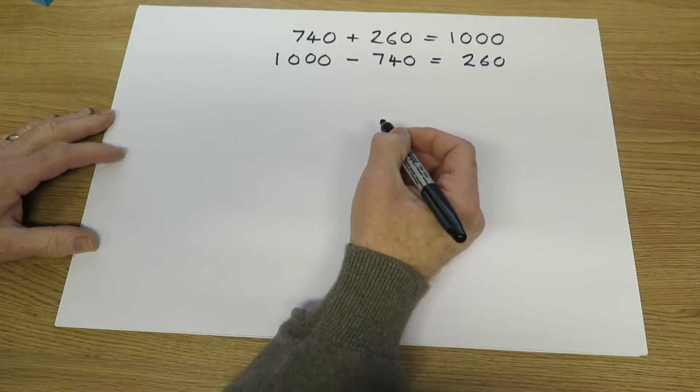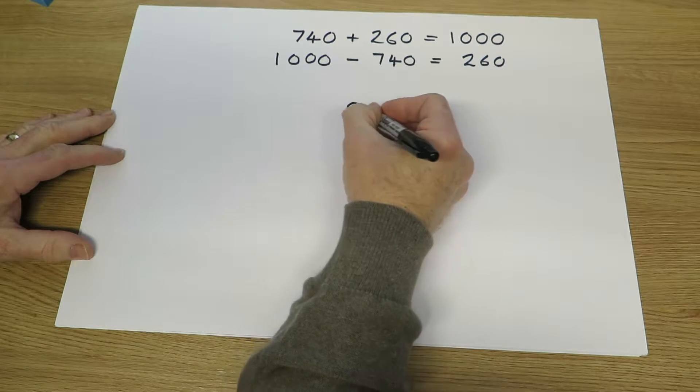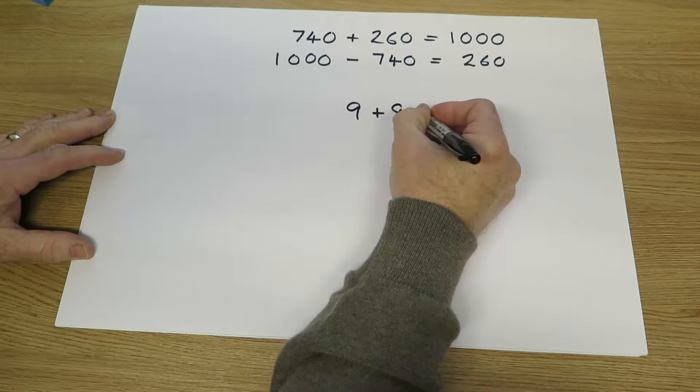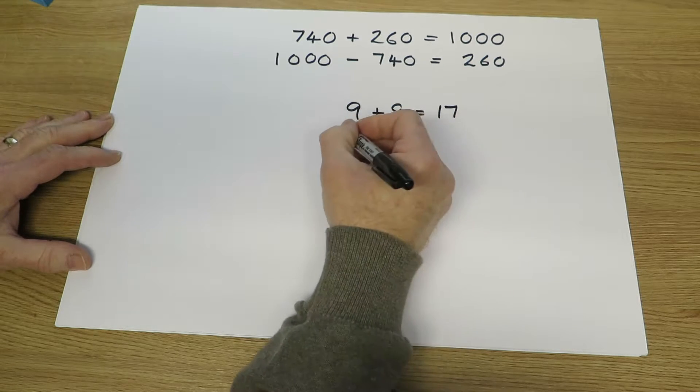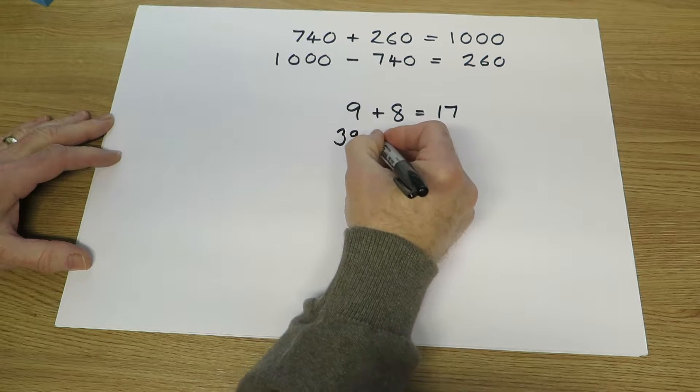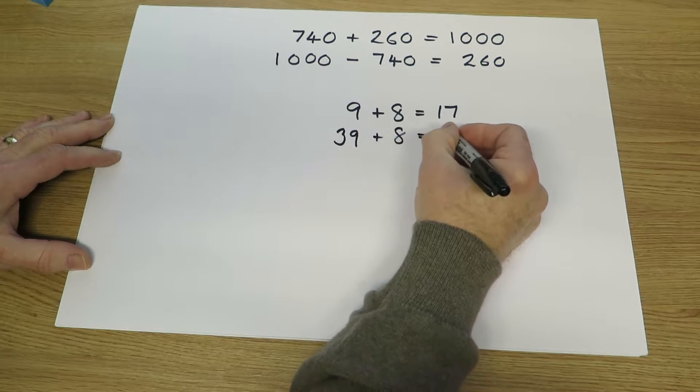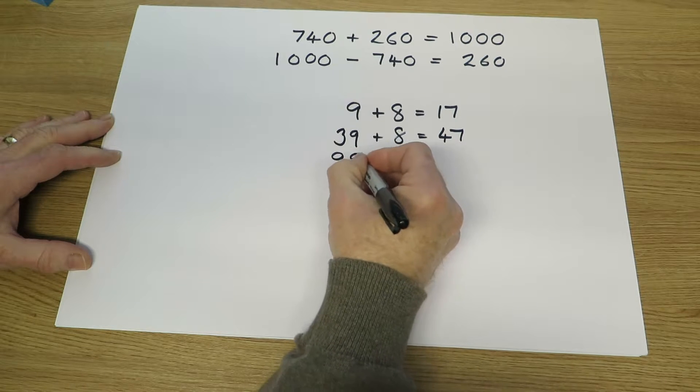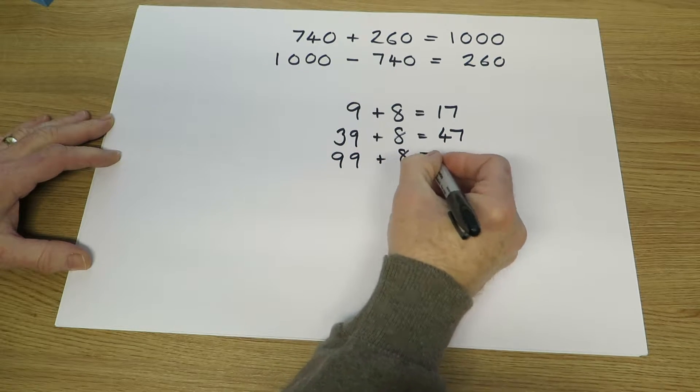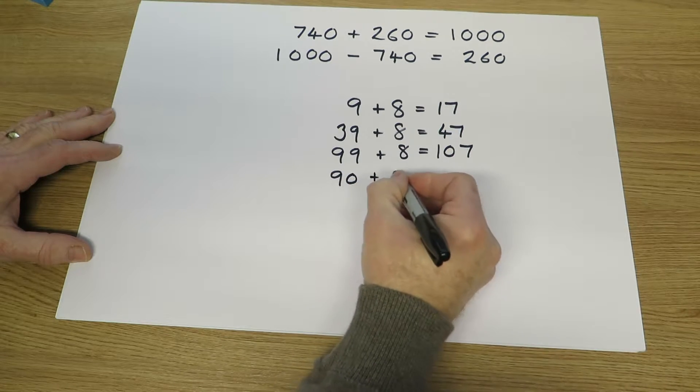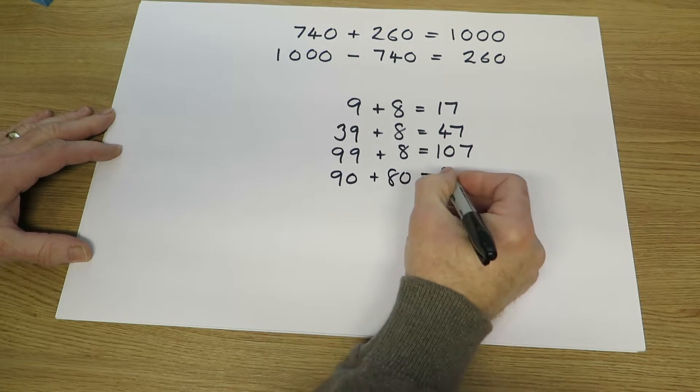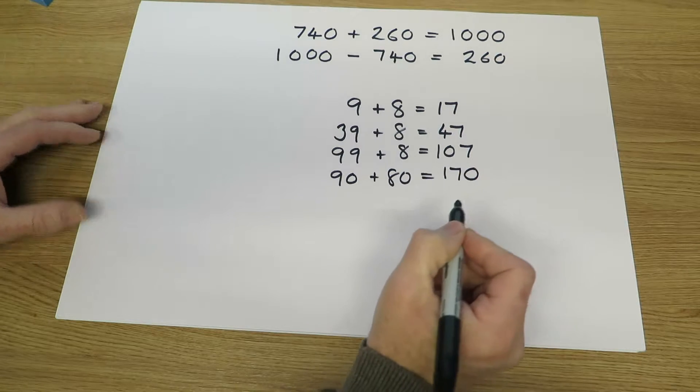The children can use their knowledge of number facts such as 9 add 8 equals 17 to find related facts such as 39 add 8 must be 47 or 99 add 8 must be 107, 90 add 80 must be 170 and so on.